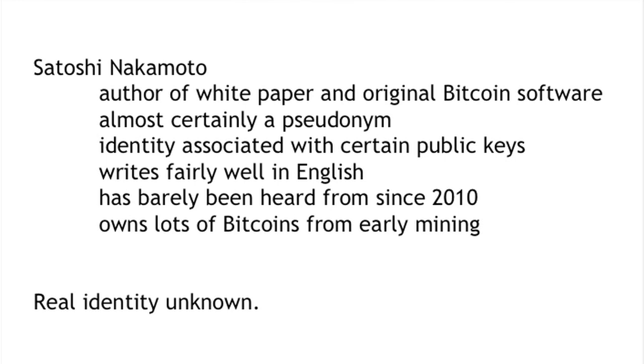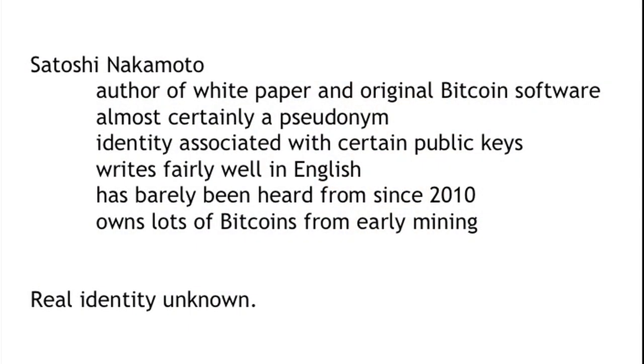This was released along with open source software to implement the Bitcoin system back in 2008. It was written by Satoshi Nakamoto, one of the central mysteries of Bitcoin. Satoshi is the author of the white paper and the original Bitcoin software. The name Satoshi Nakamoto was almost certainly a pseudonym — a fake name that some person or people adopted for the purpose of doing things related to Bitcoin. The identity of Satoshi is associated with certain public keys and accounts, so there are certain digital signatures that would convince the community that something was said or created by the real Satoshi.